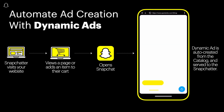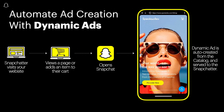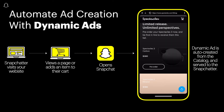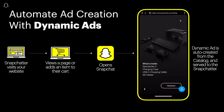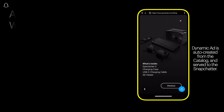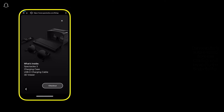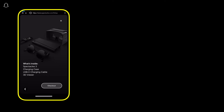Not only does this cut down on time spent manually creating ads, but our machine learning can predict which ad will be most relevant to a Snapchatter based on their past action, faster than any human could.